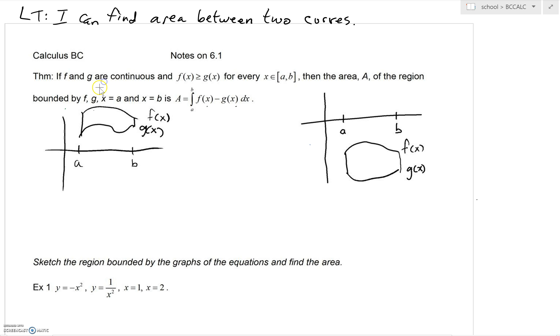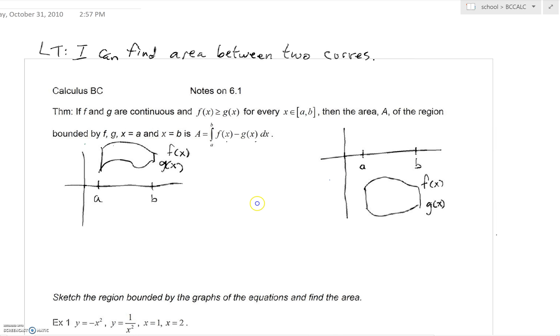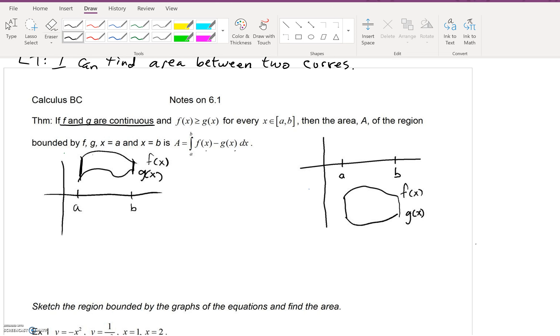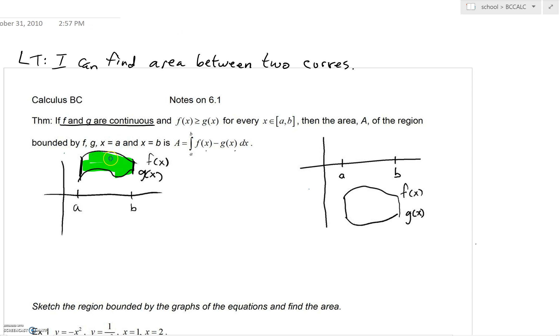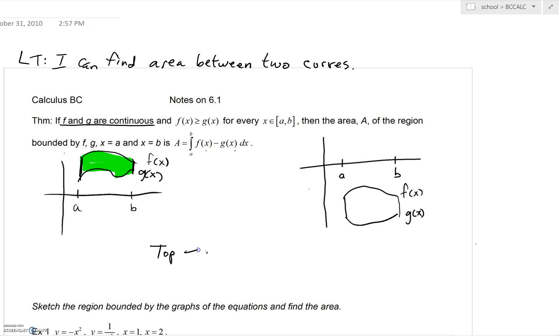Take a look at this theorem. If f and g are continuous, very big criteria to meet. You must have continuous functions. If you do not, this theorem does not apply. And if f is greater than g for every x on an interval from a to b, then the area bounded by f, g, and the lines x equals a and x equals b is simply the integral from a to b of f(x) minus g(x).